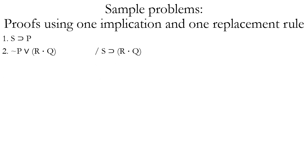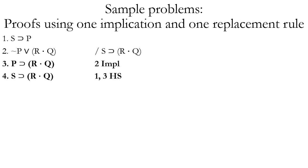Another proof using one implication and one replacement rule. Our conclusion is S horseshoe (R dot Q). The first step is to use material implication on line two to turn it into a conditional, setting ourselves up for using another rule with lines one and three. We want to get rid of P, so we use hypothetical syllogism. Hypothetical syllogism allows us to go from two conditionals where one's consequent is identical to the other's antecedent — in this case P. So we eliminate the middleman, and we're left with a new conditional that has S as the antecedent and R dot Q as the consequent.